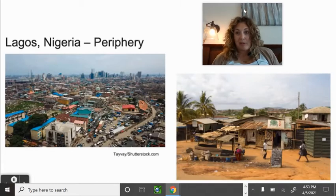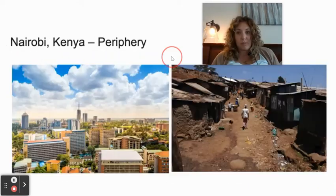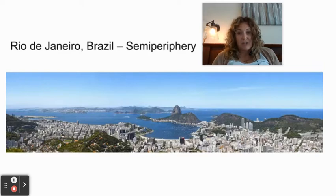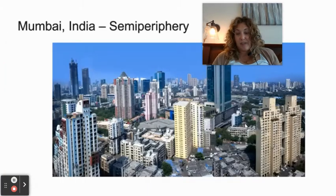Examples of periphery cities: Lagos, Nigeria is one of the most developed cities in Africa, but look at the outskirts — abject poverty. Nairobi, Kenya: very developed central business district, then look at the outskirts. Rio de Janeiro has a sprawling, developed area and then squatter settlements not far from downtown. Mumbai, India: a very developed central business district and then squatter settlements.